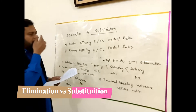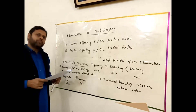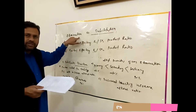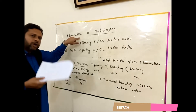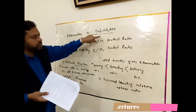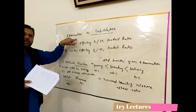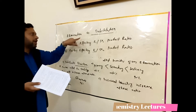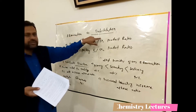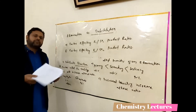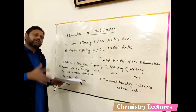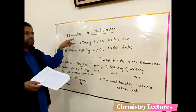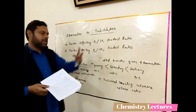Now we will discuss the most important topic of this chapter, which is elimination versus substitution. When we carry out elimination reactions, a transition state is formed, and from this transition state the reaction can go to substitution or to elimination. This means there is always a competition between elimination and substitution, and there are many factors from which we can decide which pathway the reaction takes.